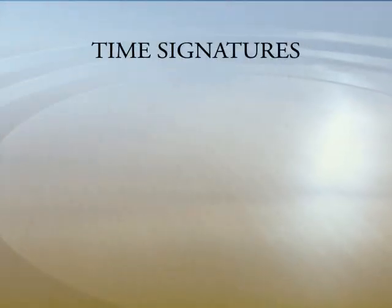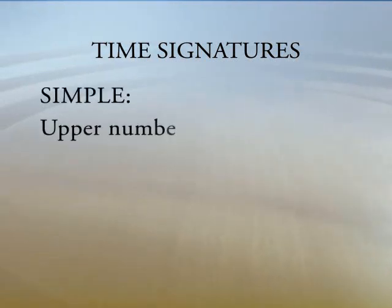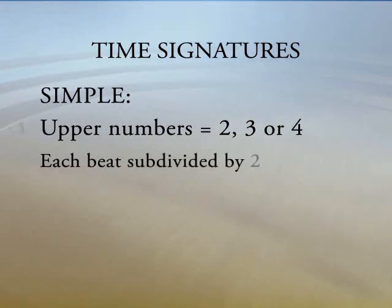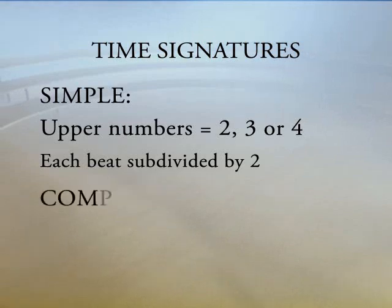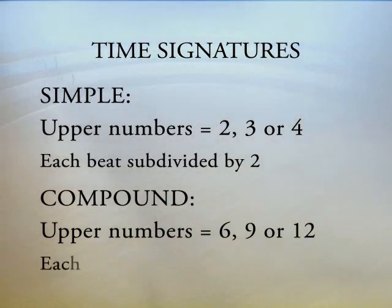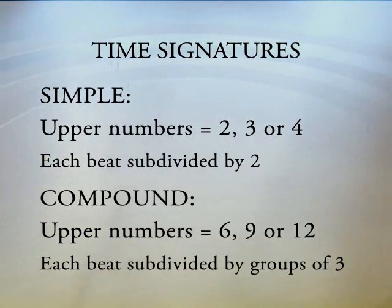In Western music there are two types of time signatures or meters. There's simple and it has the upper numbers as 2, 3, or 4 and each beat is subdivided by 2. And there's compound and it has the upper number as 6, 9, or 12. Each beat is subdivided by groups of 3.